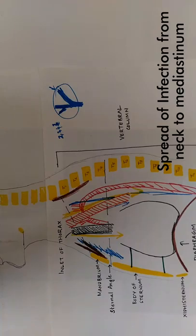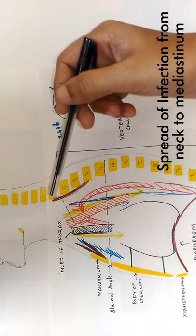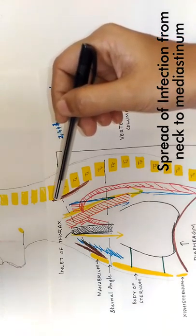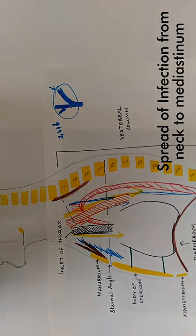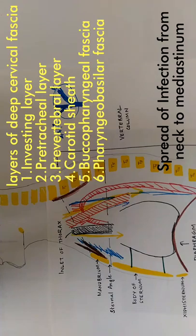We have the deep fascia of the neck, called the deep cervical fascia. This deep fascia is condensed to form different layers: the investing layer, the pre-tracheal layer, the pre-vertebral layer, the carotid sheath, the buccopharyngeal fascia, and the pharyngeal basilar fascia. We are going to discuss the pre-tracheal and pre-vertebral layers in relation to the mediastinum.